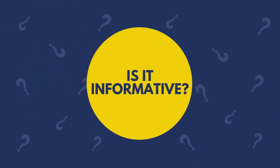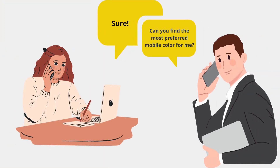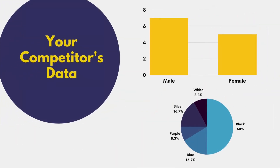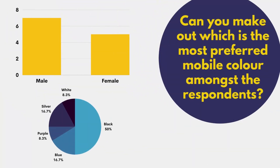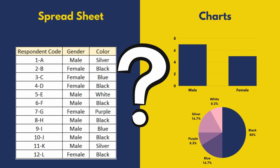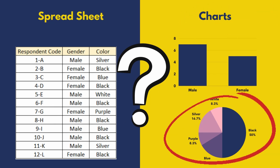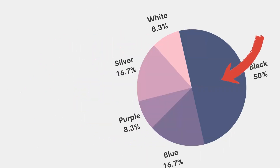Now, do you think this spreadsheet is informative? Is it providing us the most preferred color amongst the respondents? The answer is obviously no. On the other hand, let's assume one of your competitors is given the same task and she has presented her data using graphs like these. Can you make out which is the most preferred mobile color amongst the respondents? Let's compare your spreadsheet with your competitor's graph side by side. As you can see, the graph on the right side clearly conveys that 50% of the people preferred black colored mobiles, while the spreadsheet on the left was not able to do it.